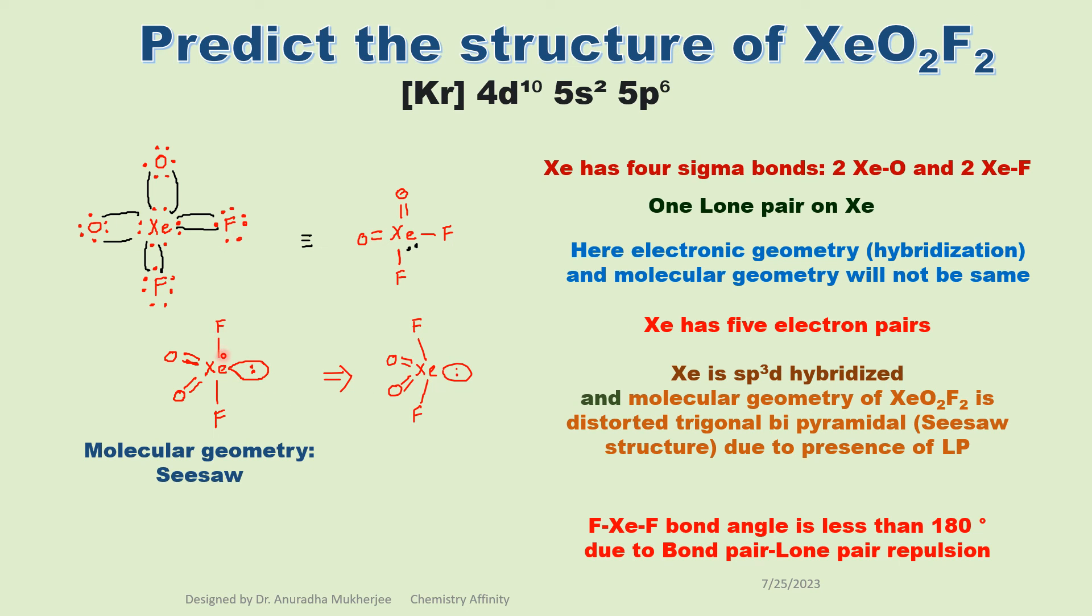Now there will be bond pair-lone pair repulsion between the xenon-fluorine bond pair and this lone pair. Due to this bond pair-lone pair repulsion, the fluorine-xenon-fluorine bond angle will be less than 180 degrees.